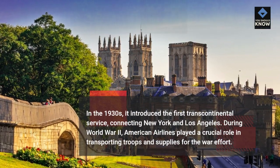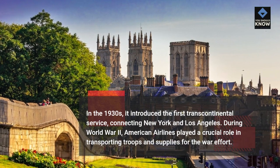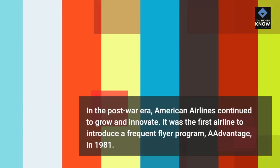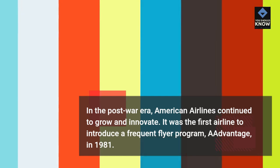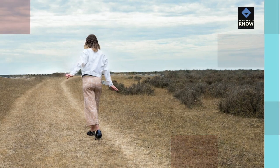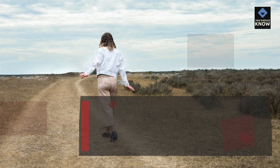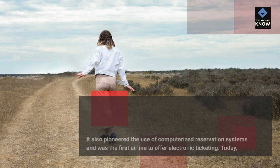During World War II, American Airlines played a crucial role in transporting troops and supplies for the war effort. In the post-war era, American Airlines continued to grow and innovate. It was the first airline to introduce a frequent flyer program, AAdvantage, in 1981. It also pioneered the use of computerized reservation systems and was the first airline to offer electronic ticketing.